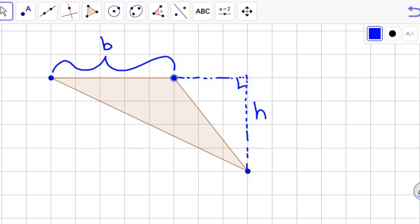My base is 1, 2, 3, 4, 5. My height is 1, 2, 3, 4. And so the area of this triangle is 5 times 4 divided by 2, or 10 units squared.